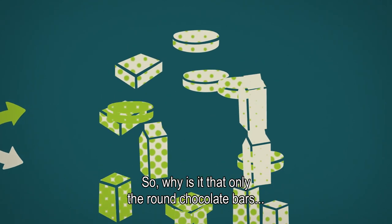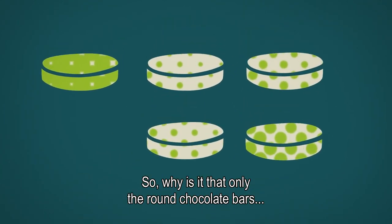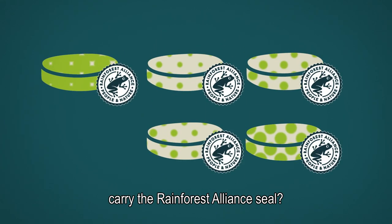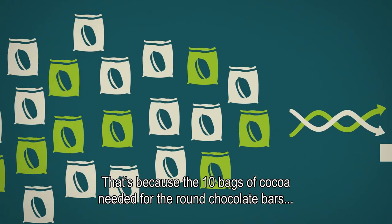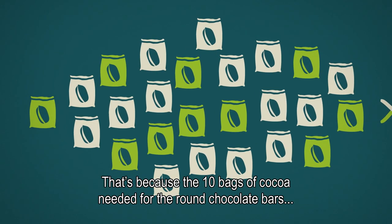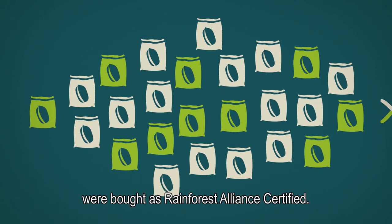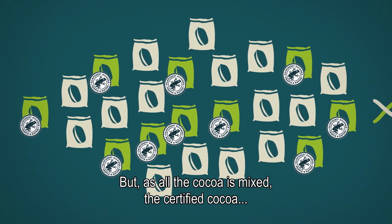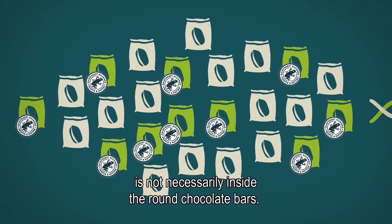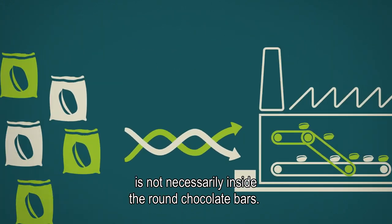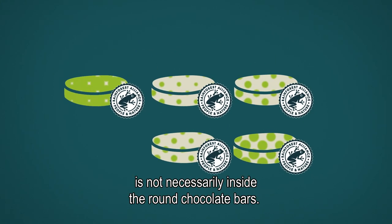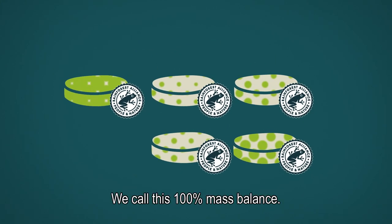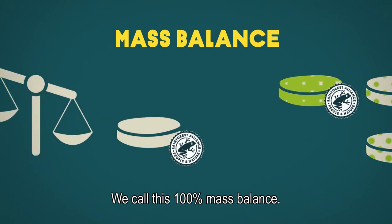So why is it that only the round chocolate bars carry the Rainforest Alliance seal? That's because the 10 bags of cocoa needed for the round chocolate bars were bought as Rainforest Alliance certified. But as all the cocoa is mixed, the certified cocoa is not necessarily inside the round chocolate bars. We call this 100% mass balance.